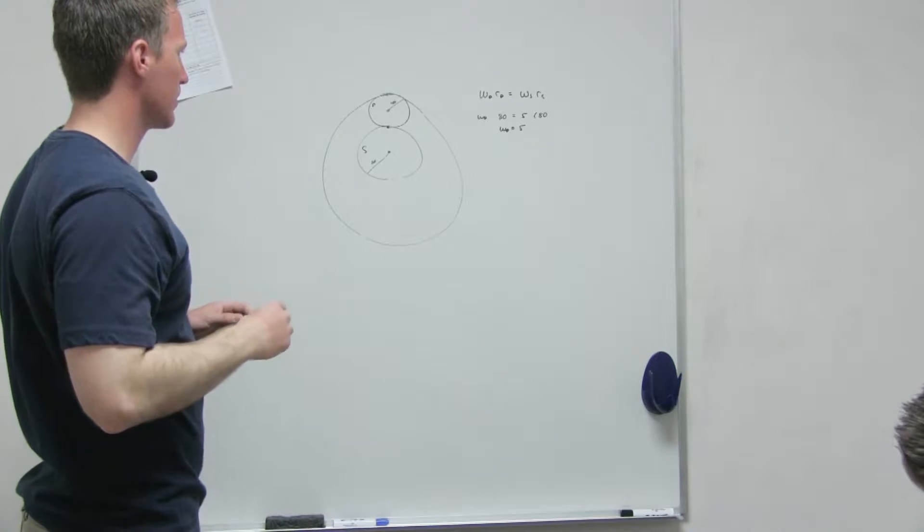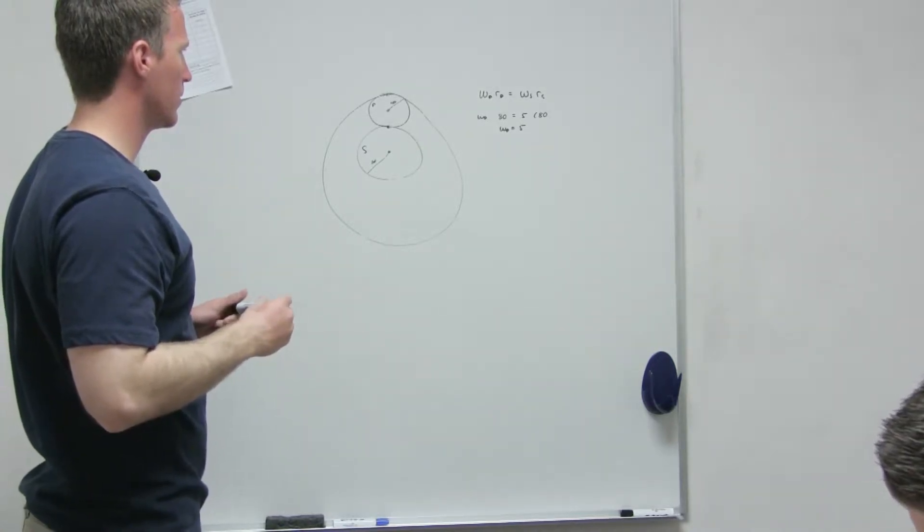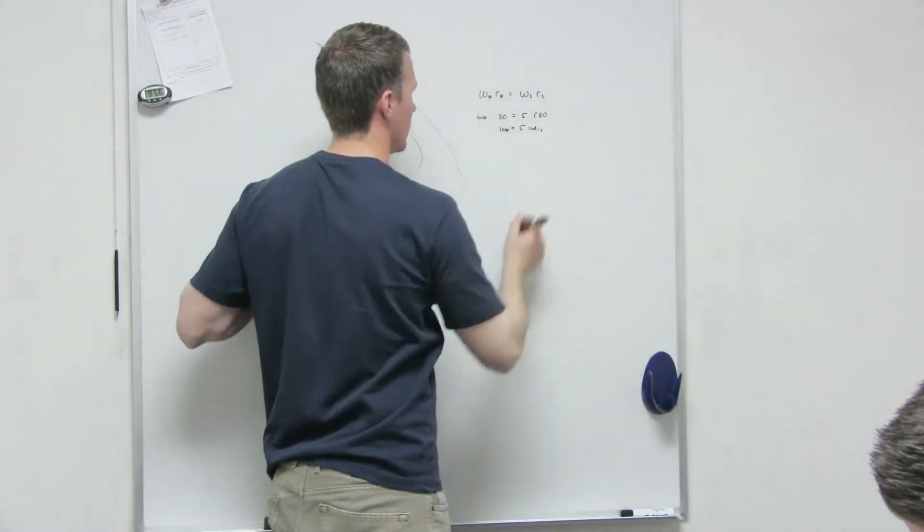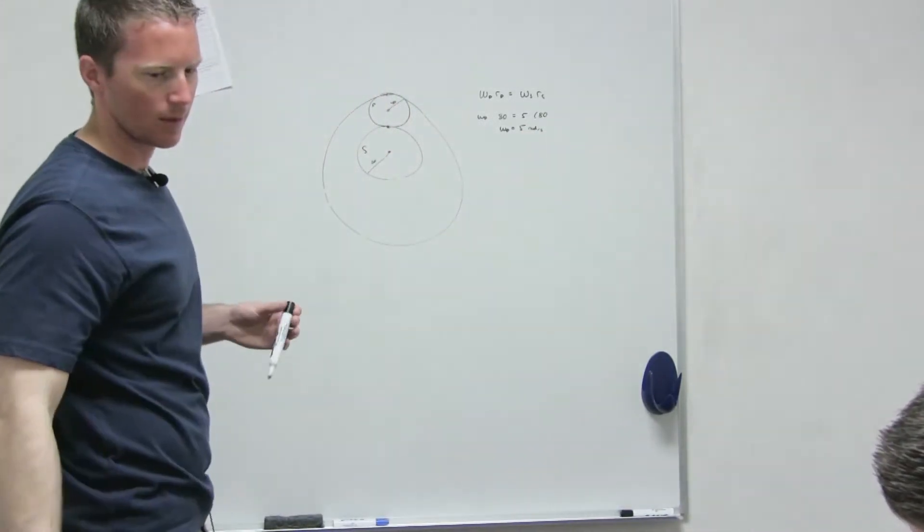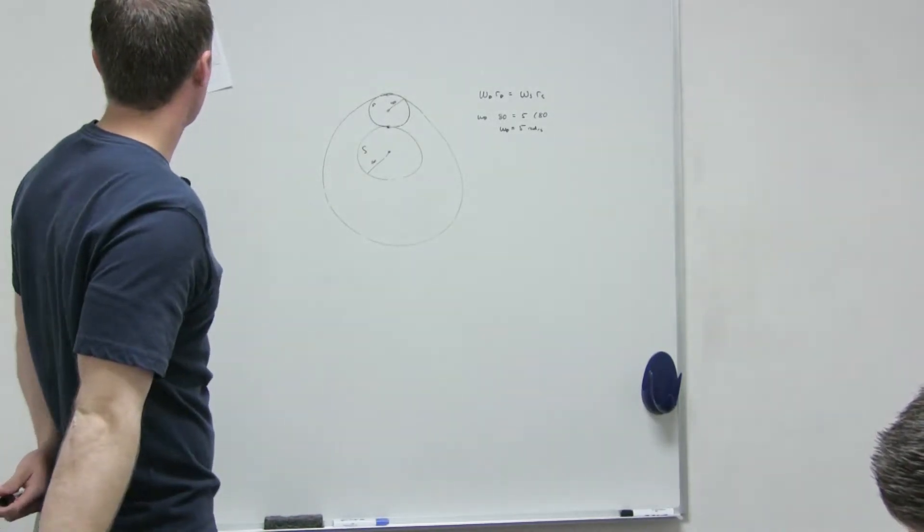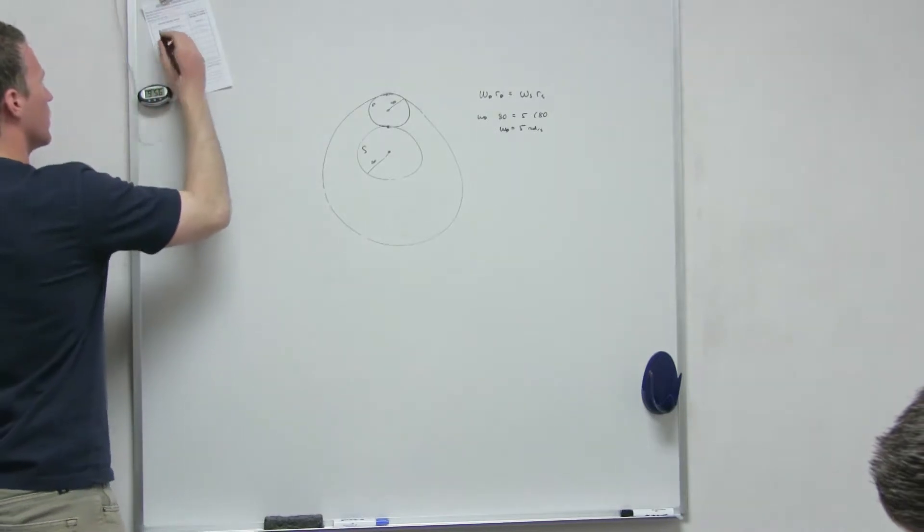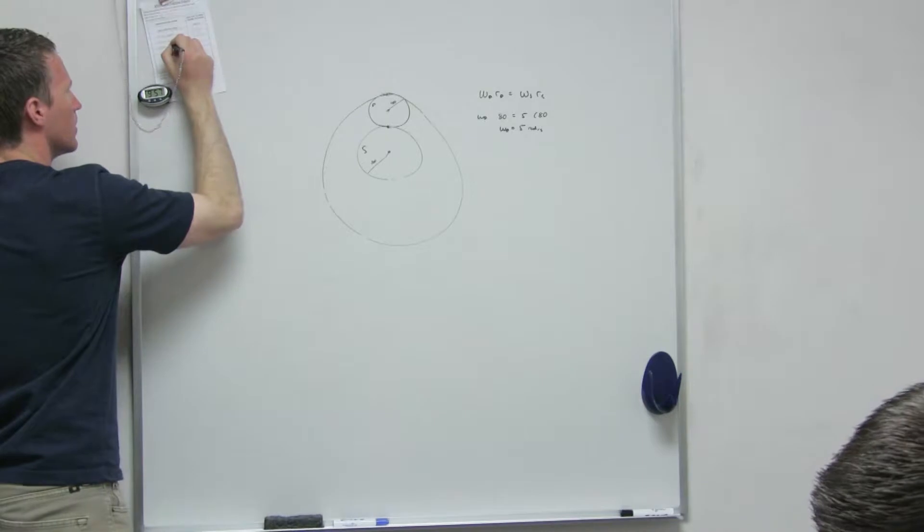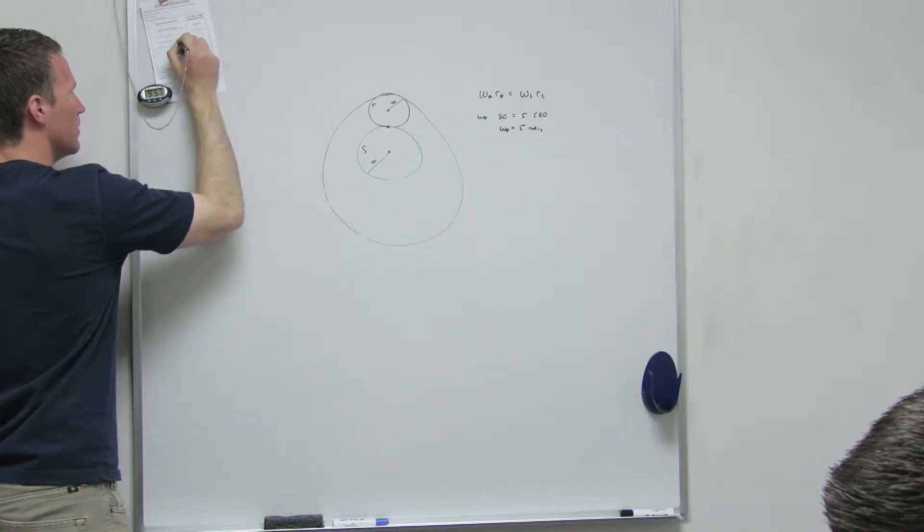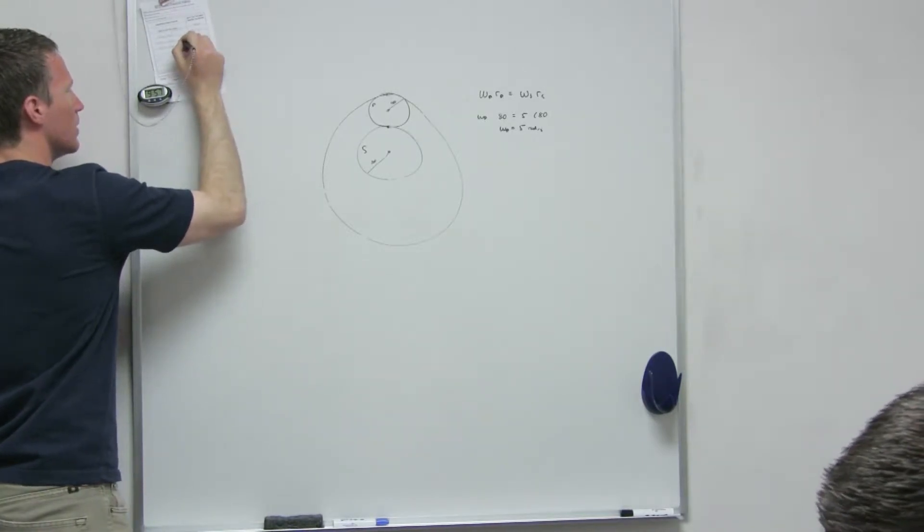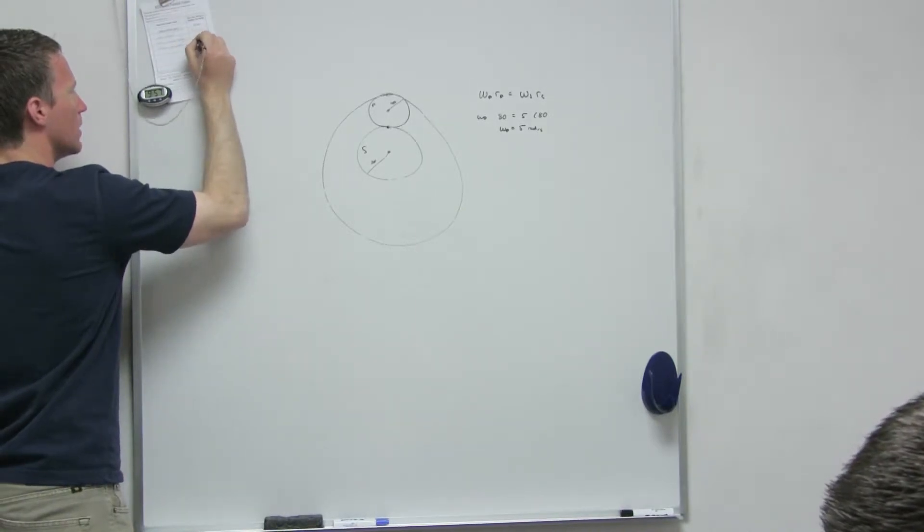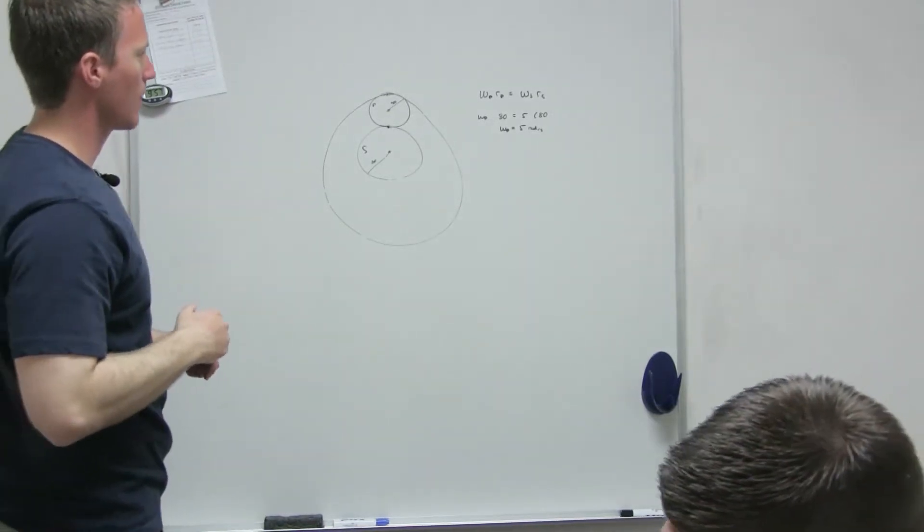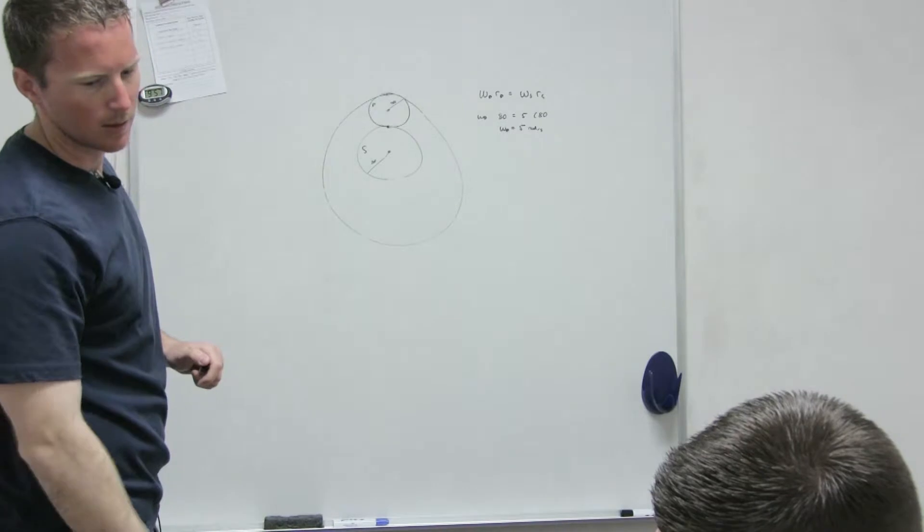Okay, so this one has to be - they're always, they're always. Okay, let's read omega P equals 5 radians per second. Okay, now if we do the other one, we're doing the shaft of A that's in the center.